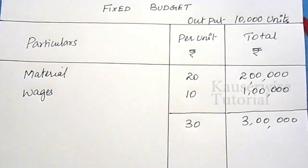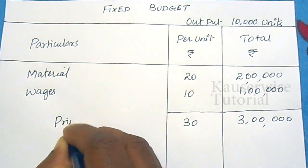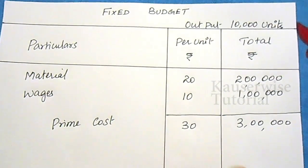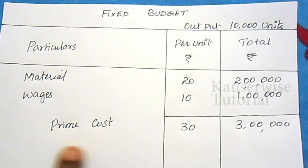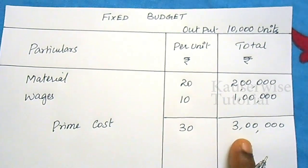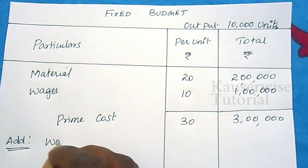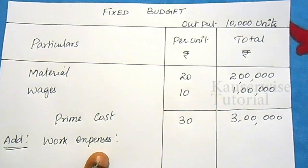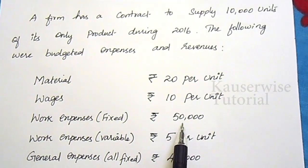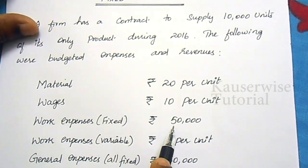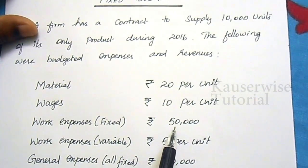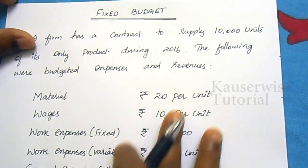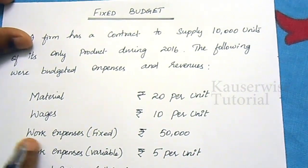Prime cost consists of direct material, direct labour, and direct expense. Here we have material and wages, so total prime cost is ₹30 per unit and ₹3,00,000 in total. Next, we add work expense — that is, work overheads. All indirect expenses are called overheads. Work expense fixed is ₹50,000; since we are preparing a fixed budget, we enter the total cost directly.